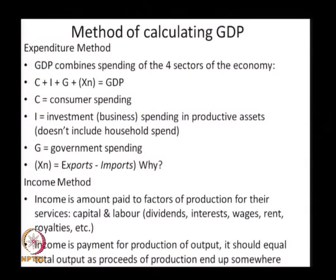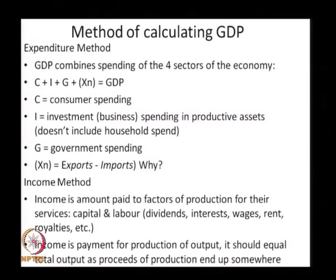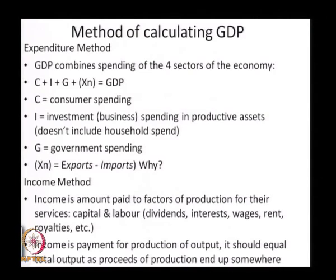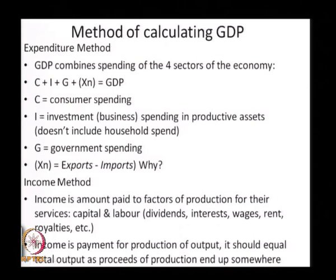These five groups include C — consumption by households, which is consumer spending; I — investment in productive assets, which is business spending for productive assets; G — government spending on goods and services; and the net of exports and imports. Consumer spending plus investment in productive assets by businesses plus government expenditure plus net exports constitutes the GDP calculated based on the expenditure method.